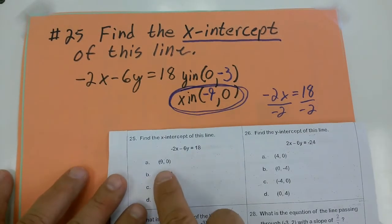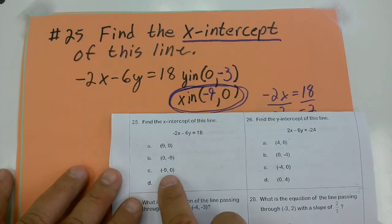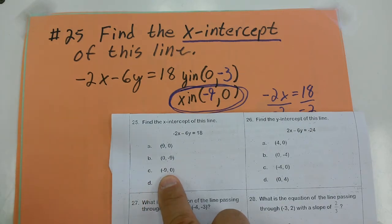Not (9, 0). Not (0, -9) - they're trying to trick you. (-9, 0), that's the correct answer choice.